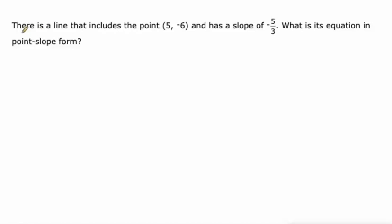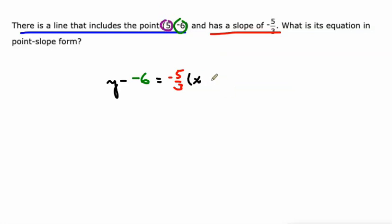So now we've got a line that includes this point and has this slope. Alright, y minus our y value equals m, negative 5/3, times x minus our x value. Our x value is 5.